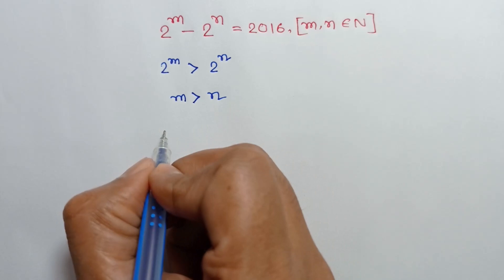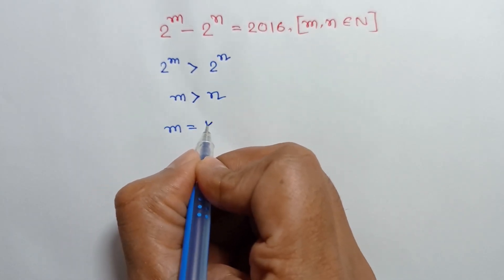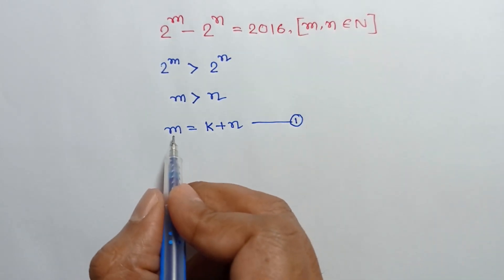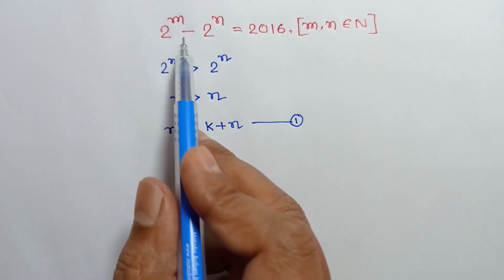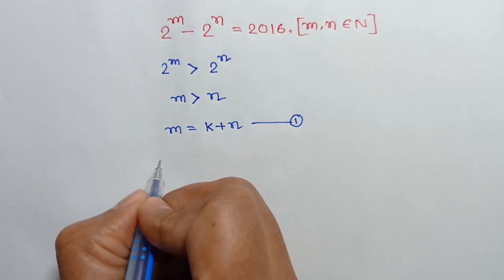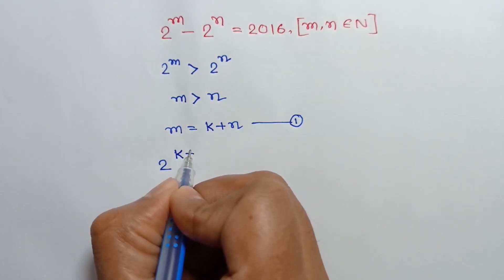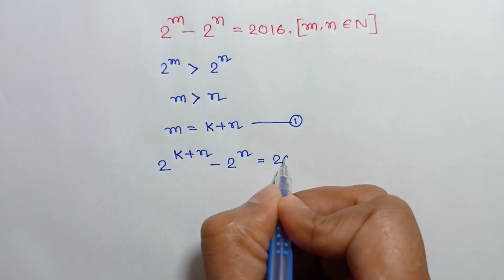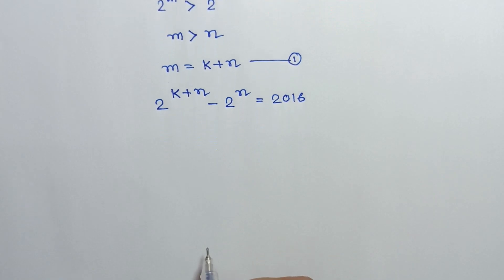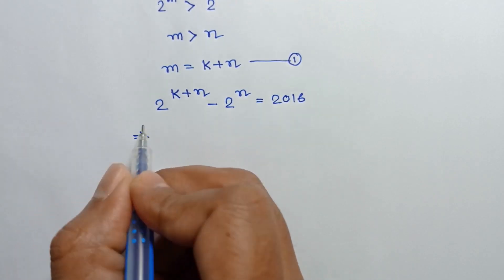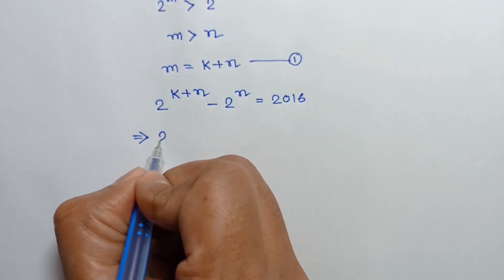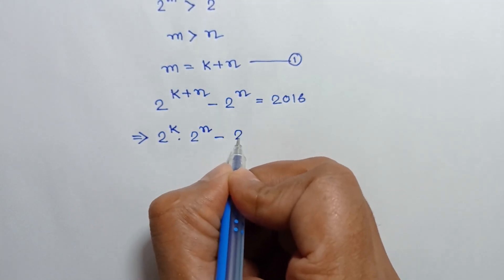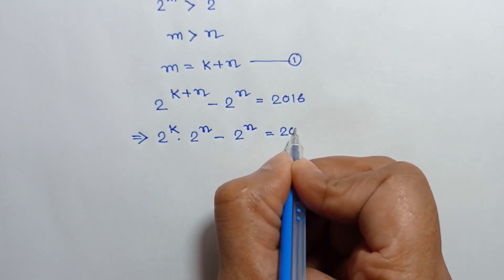So, let us consider m is equal to k plus n — call it equation number 1. Now, substituting m in our given equation, we can write 2 to the power (k plus n) minus 2 to the power n is equal to 2016.